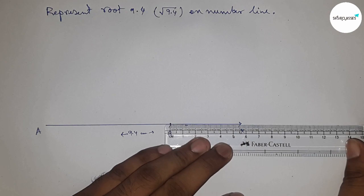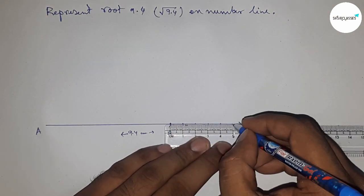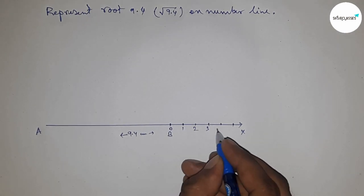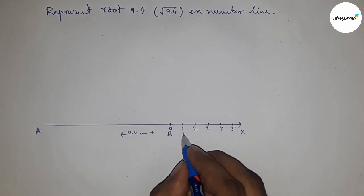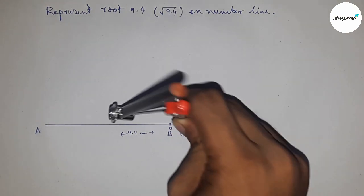Next, mark all the numbers from B to X on the line. Mark the numbers: 1, 2, 3, 4, 5, and so on. This is point C.